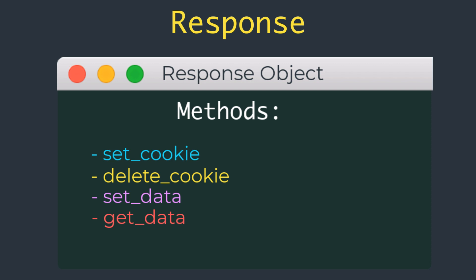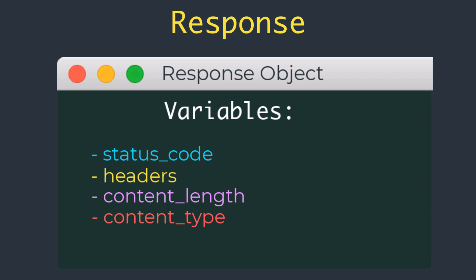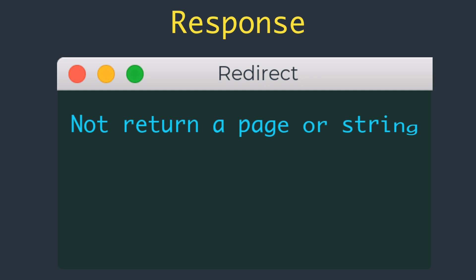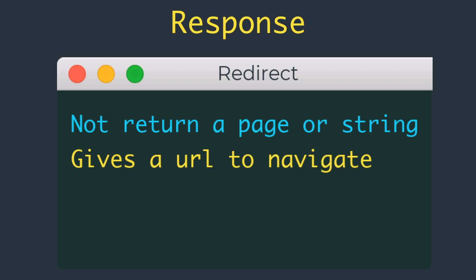Variables available on the response object include: status_code, which returns the numeric HTTP status code; headers, a dictionary-like object with all headers that will be sent with the response; content_length, the length of the response body; and content_type, the media type of the response body. There is also a special type of response called redirect — this response doesn't include a page document, it just gives the browser a new URL to navigate to. A very common use of redirect is when working with web forms.